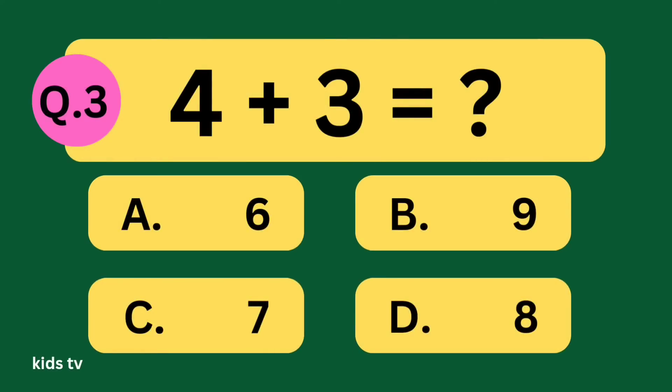4 plus 3 equal what? A: 6, B: 9, C: 7, D: 8.